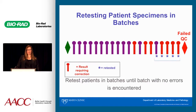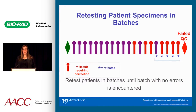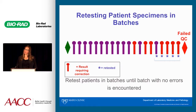For high-volume labs, I would propose retesting patient specimens in batches. This is the approach we use in our laboratory at the Mayo Clinic. We retest patients in batches until we get to a batch where no error is encountered — meaning no change in the result that's considered clinically significant based on the criteria we've established.